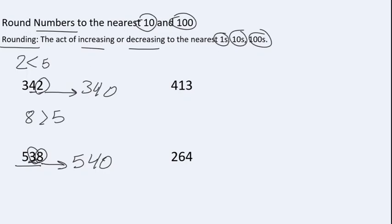We say that five hundred thirty-eight is rounded to five hundred forty. When we round numbers to the nearest tens, we consider the number between two tens.